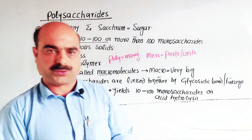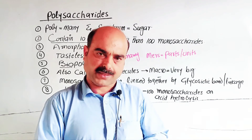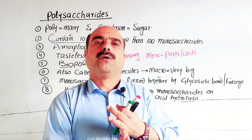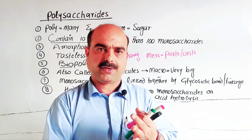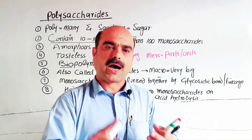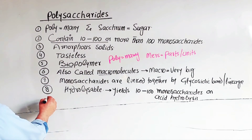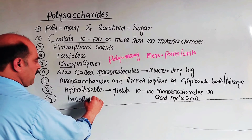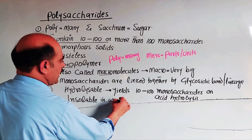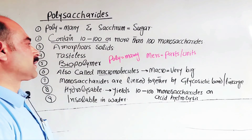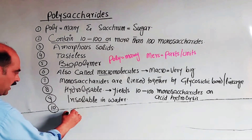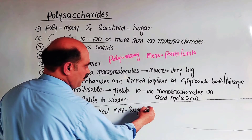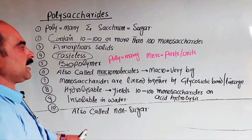So the definition: polysaccharides are those organic compounds, biopolymers, or macromolecules which are composed of 10 to 100 or more monosaccharide units, and which yield 10 to 100 or more monosaccharide molecules upon acid hydrolysis. Additionally, they are insoluble in water.